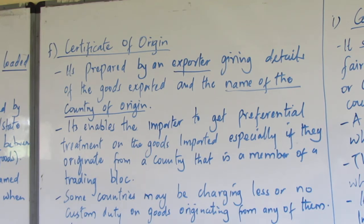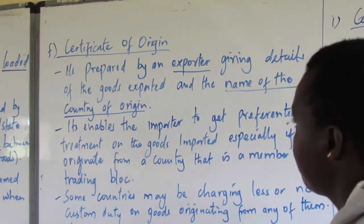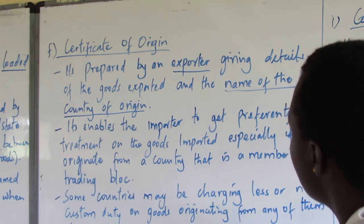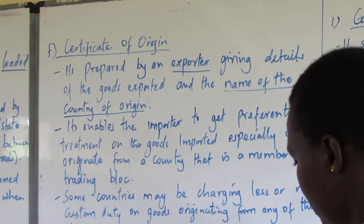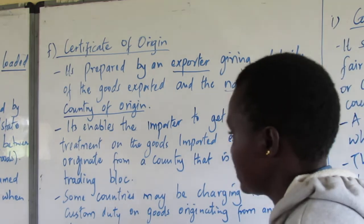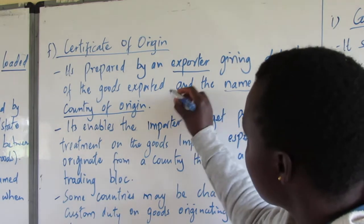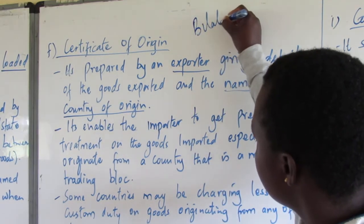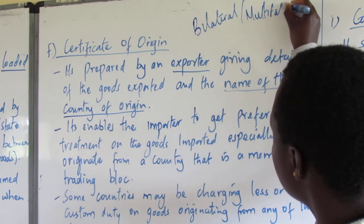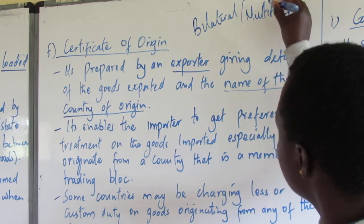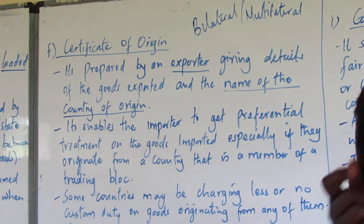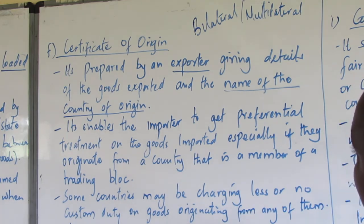Our next document is the certificate of origin. It is prepared by an exporter giving details of the goods exported and the name of the country of origin. The name is very important because we have business treaties and business agreements. We have bilateral and multilateral trade, and trade agreements among many countries.